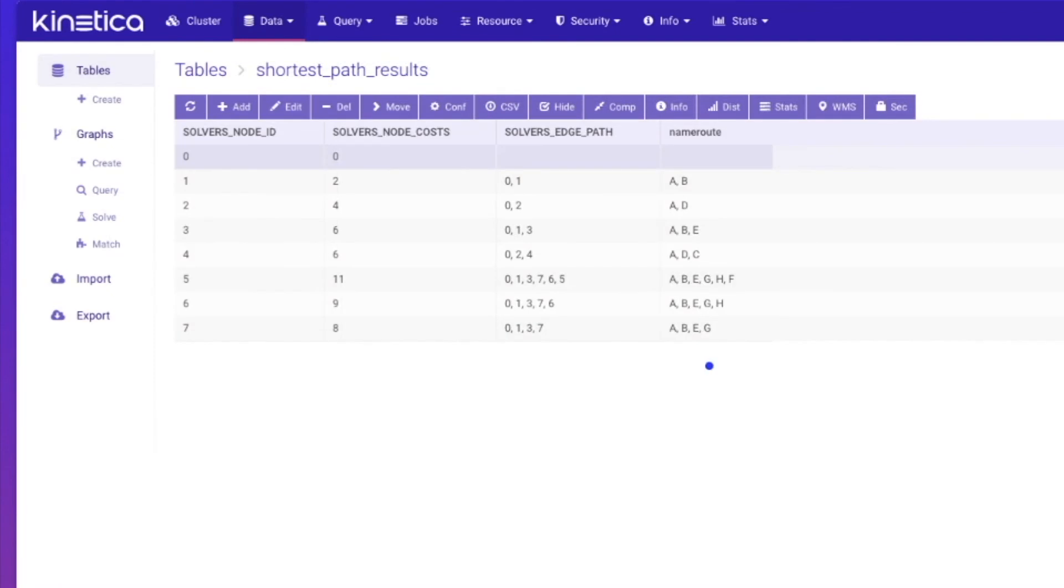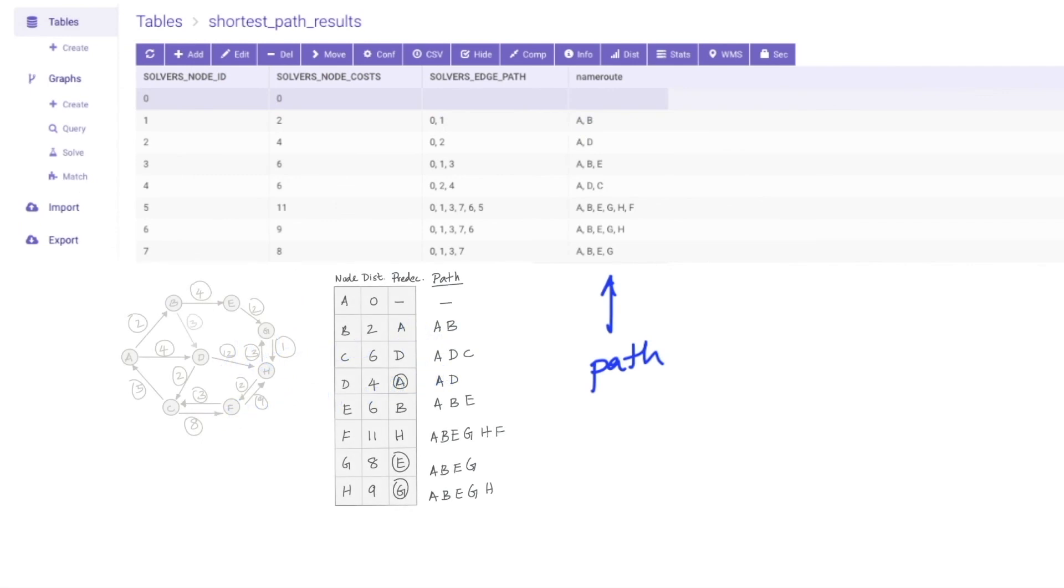The column name route represents the shortest paths from the source A to every other node in the graph, while the solver node cost column represents the distance value for that path. The paths as we can see match those that we calculated by hand.